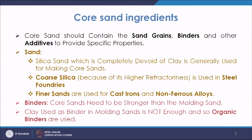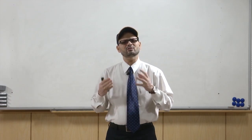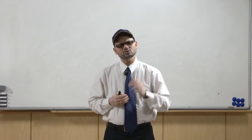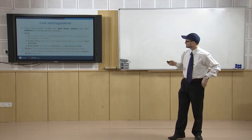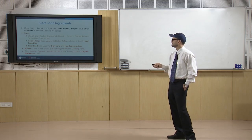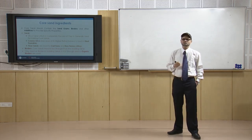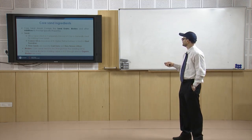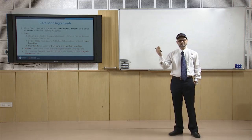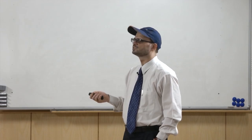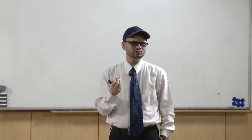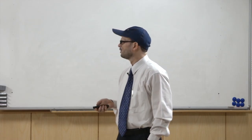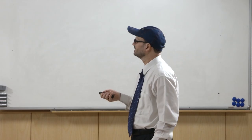Coarse sand is used for steel foundries because it has higher refractoriness, and steel foundries require higher temperatures to cast metal. For cast iron — where the melting temperature is close to 1140°C — or non-ferrous alloys like copper or aluminum where temperatures are even lower, you can use finer sands. So you have to select sand of appropriate grain size so that it can withstand the required temperature.